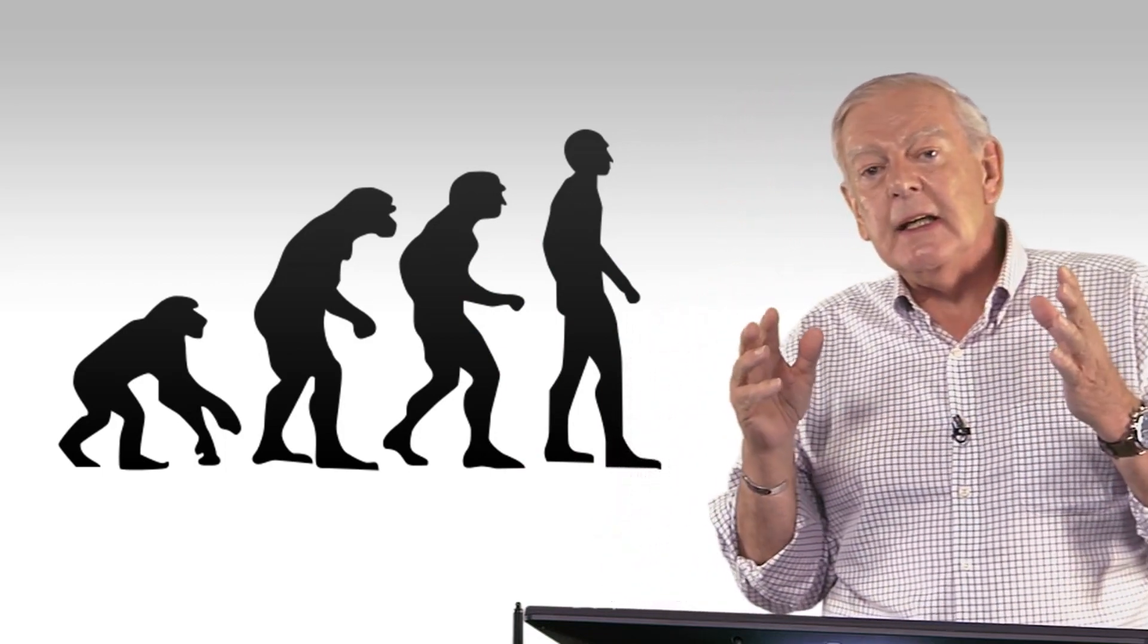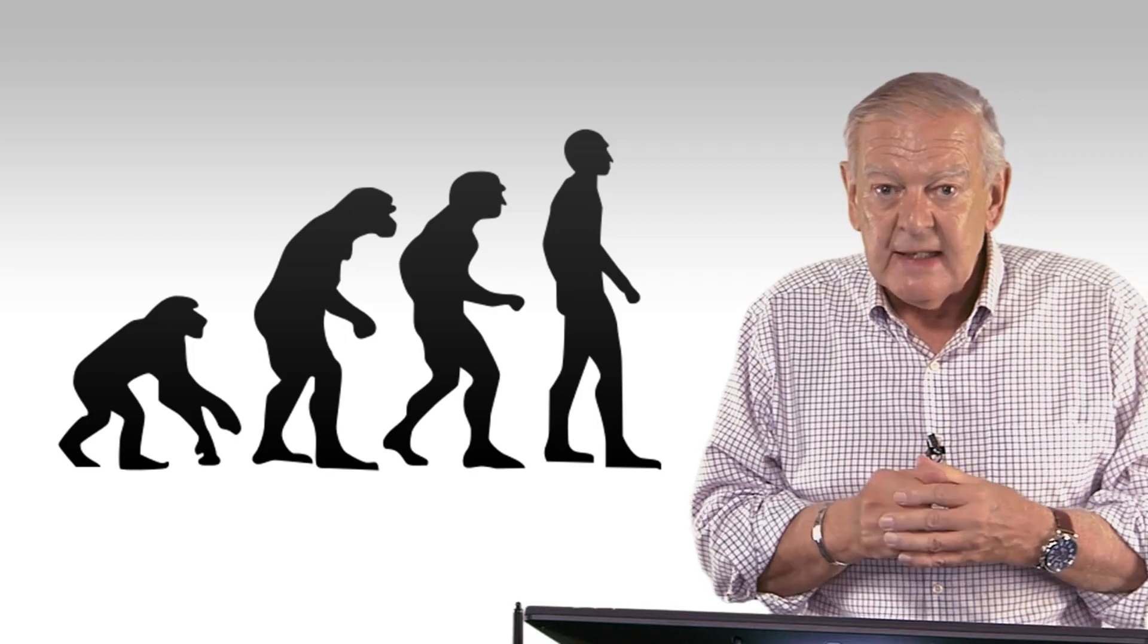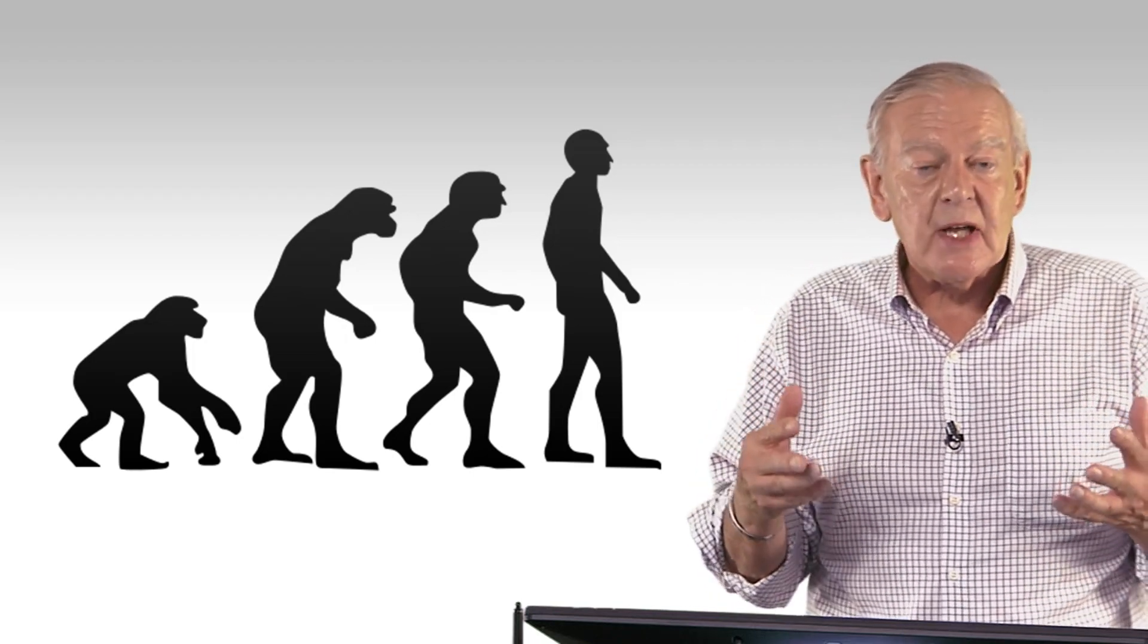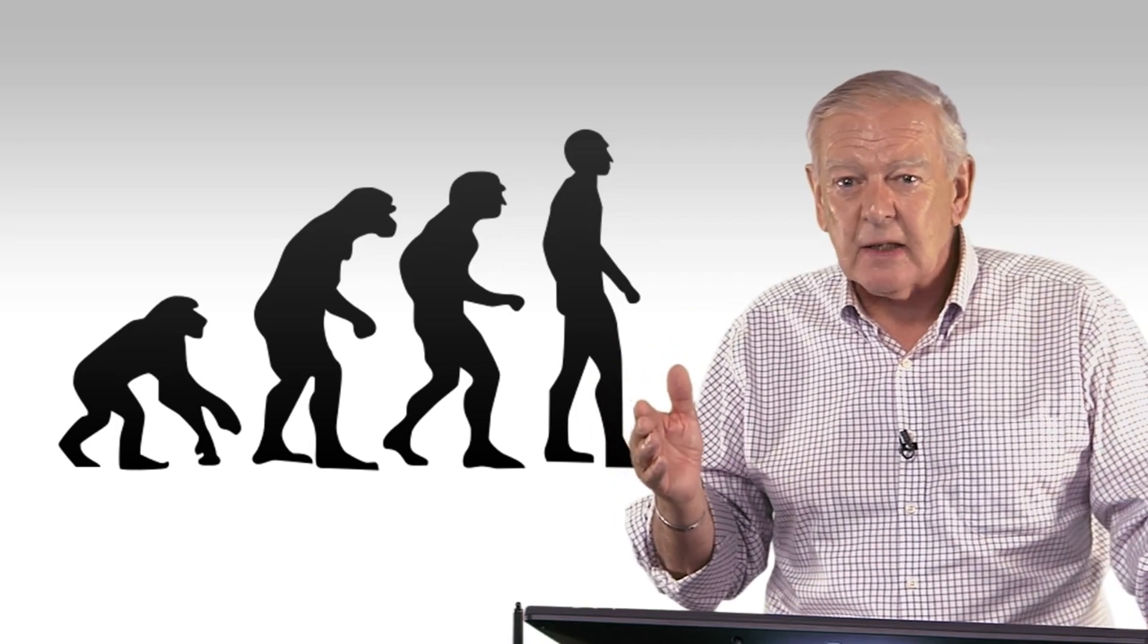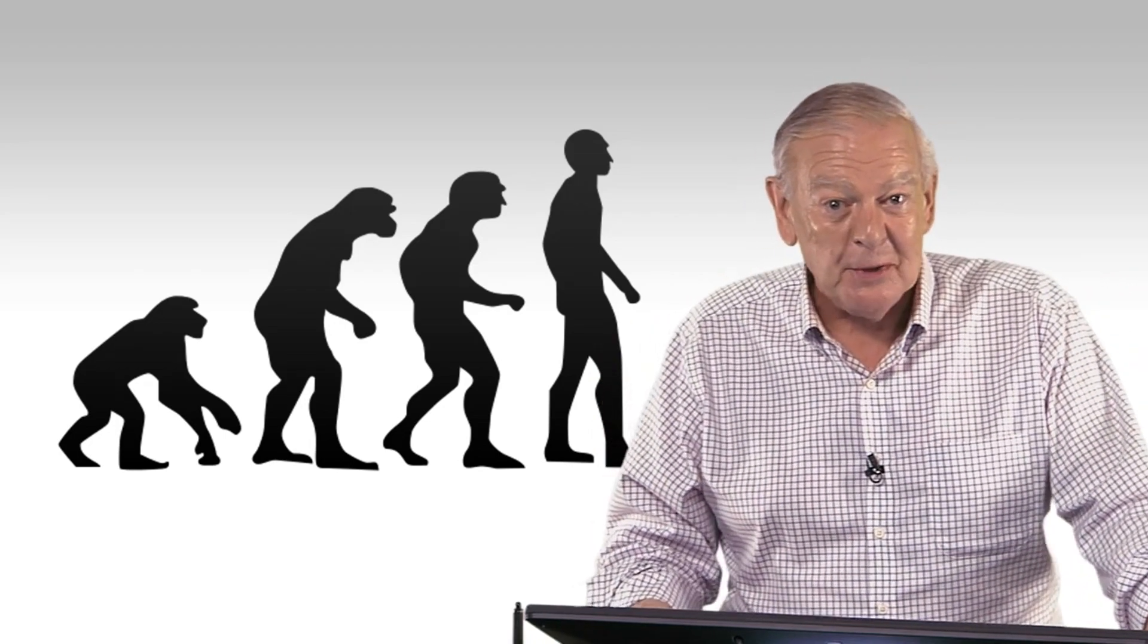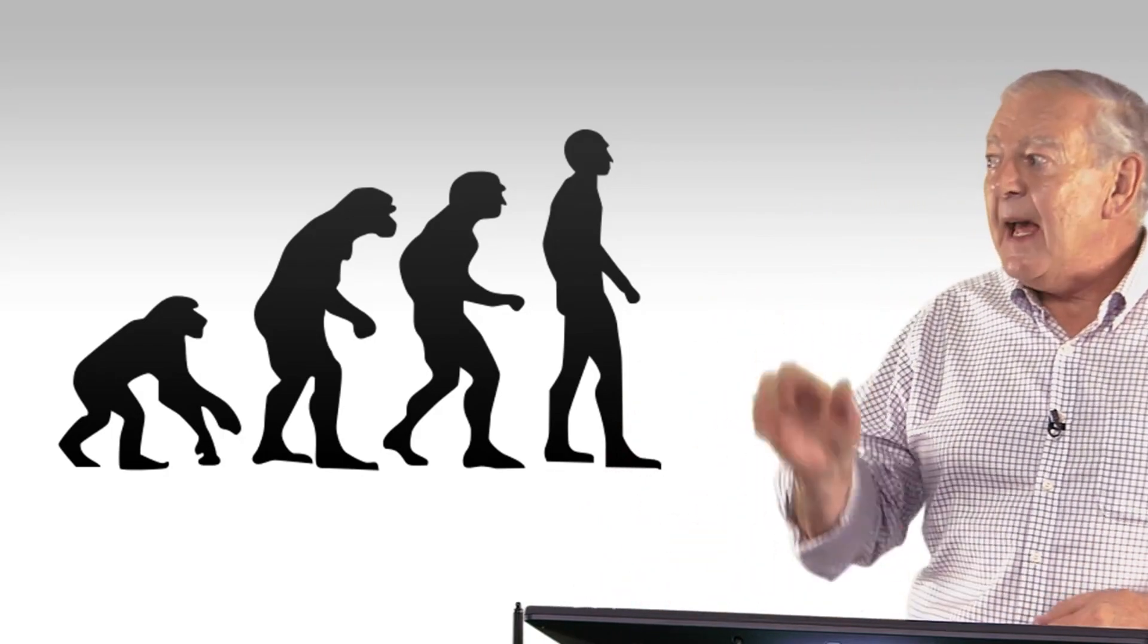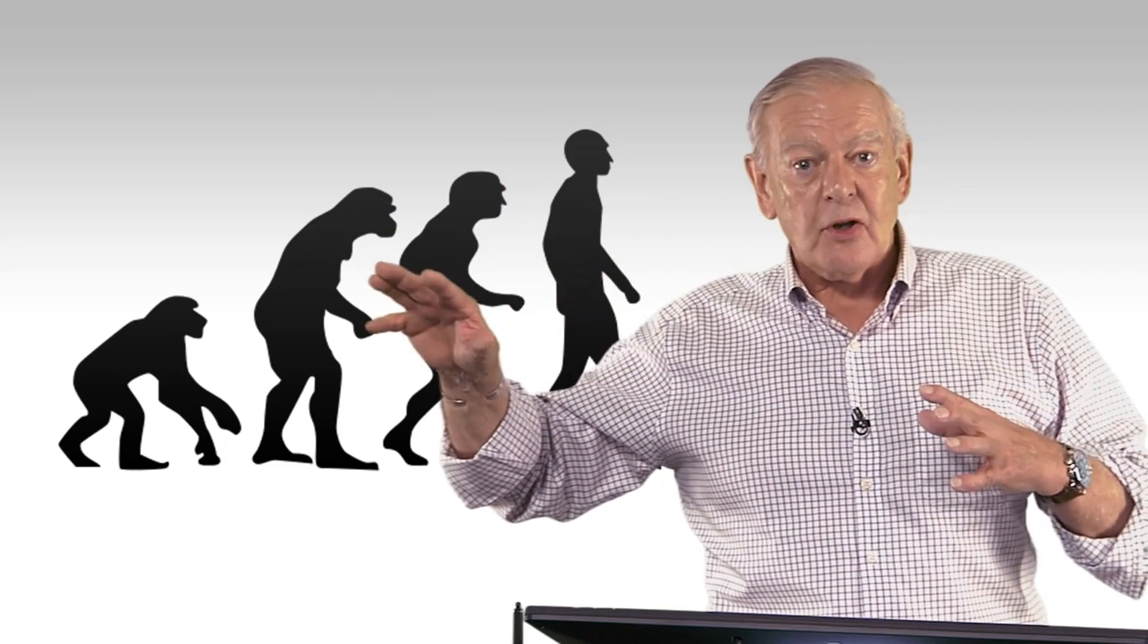And really, I think you understand from, I hope, much of what we talked about, that it's really, as Darwin said, a branching situation. It's not a direct line from ape to angel, as someone entitled their book. It's not an inexorable march through time from ape to modern human.